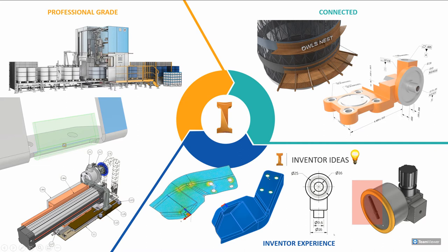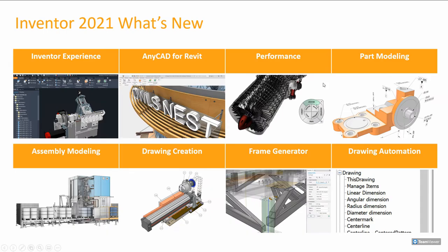Those are the three main areas that Autodesk categorize their changes in, and we'll go through each of these areas and break down what they've done. Moving to the what's new, we can break those three areas down further into the Inventor experience — how you interact with Inventor and how they change the user interface. The biggest change for 2021 is the introduction of a pre-release dark theme.